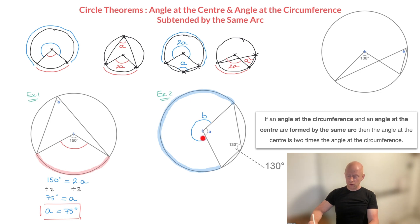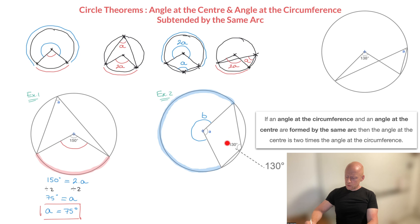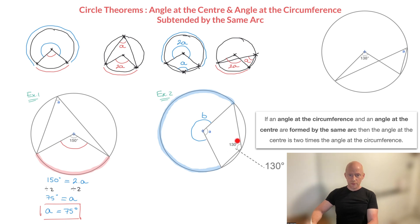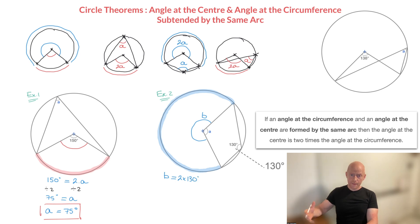Let's go ahead and find angle B. Using the angle at the center theorem, since this 130-degree angle at the circumference and angle B at the center are subtended by the same arc, we can state that angle B must be equal to two times the angle at the circumference. In other words, B is equal to 2 times 130 degrees. Two times 130 is 260, so B is equal to 260 degrees.